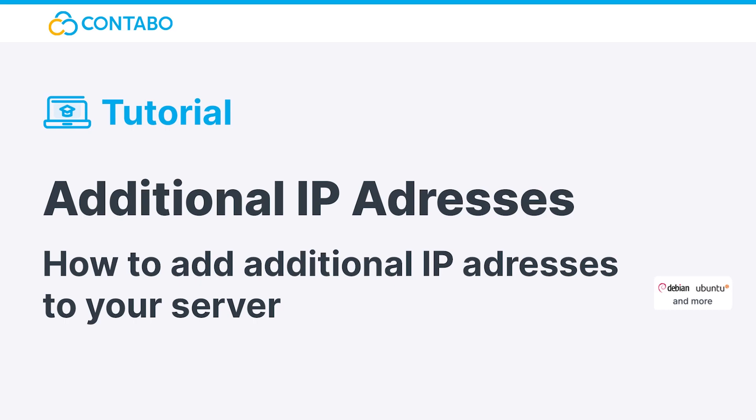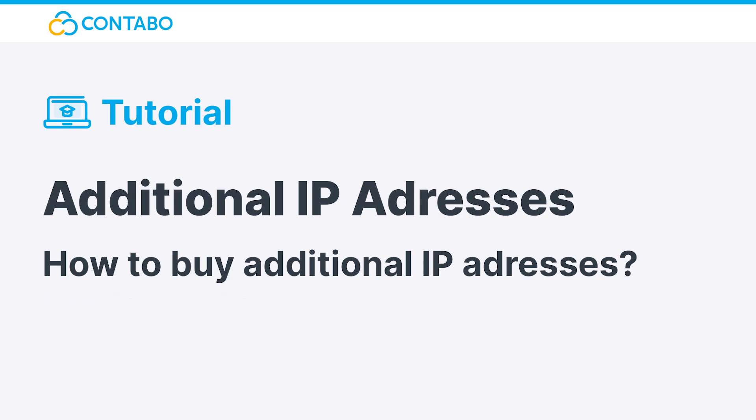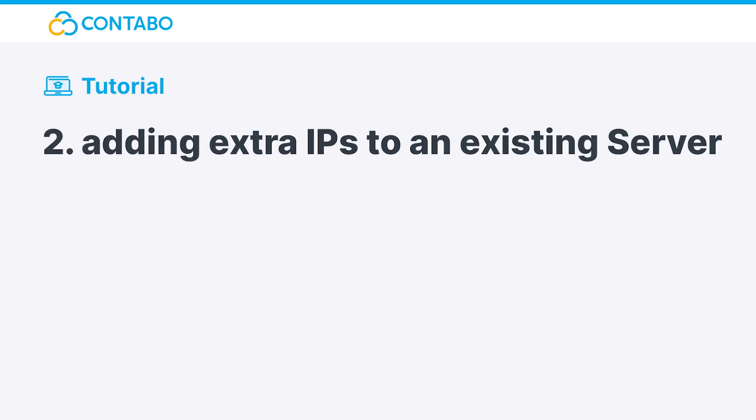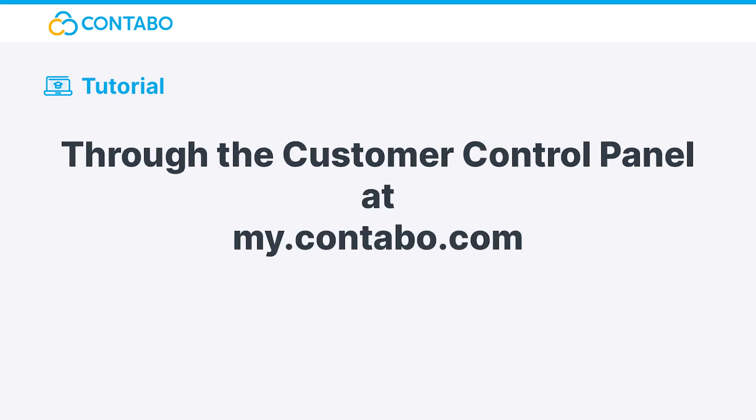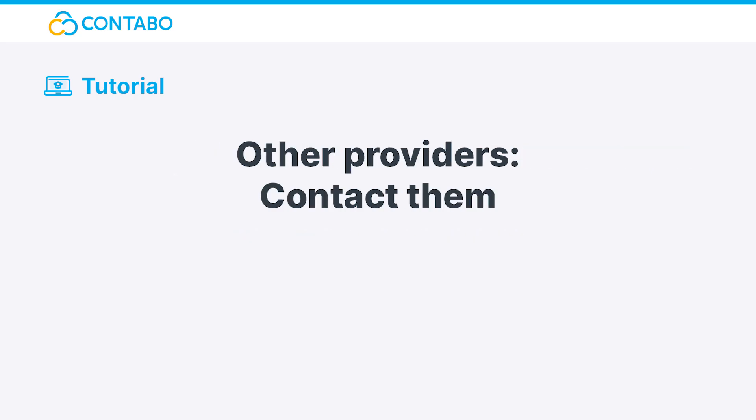In today's video I will show you how to configure additional IP addresses for your server for different operating systems and how to buy them. Buying additional IP addresses is possible in two ways. The first way is during the ordering process. The second way is for already existing servers. Just head over to the Customer Control Panel at my.contabo.com and order your additional IP there. For other providers, contact them.